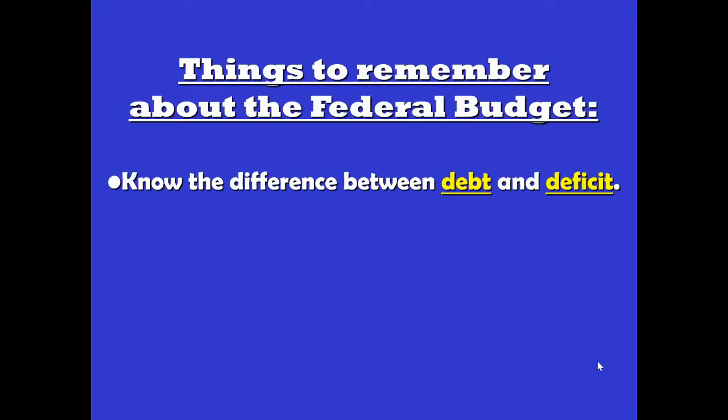Deficit spending happens on an annual basis. Every year that we spend more than what we take in in taxes — we meaning the federal government — the idea is that we have a leftover amount that still needs to be funded. That is the annual deficit for that year. If you take this year's deficit and last year's deficit and all the deficit spending done each year of the history of the American government and add it all up, what you get is the total national debt.